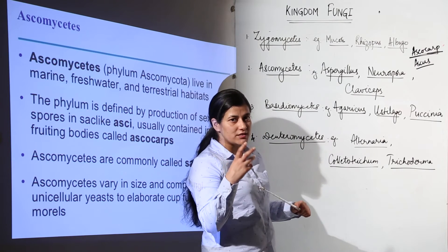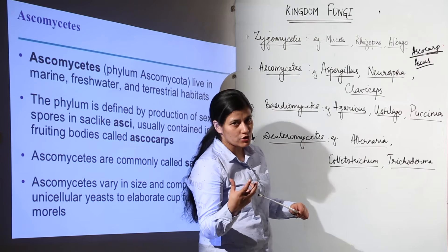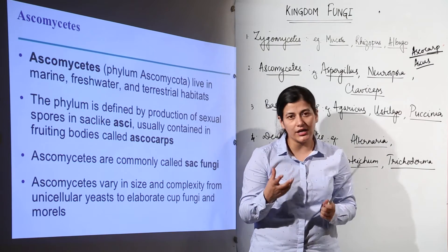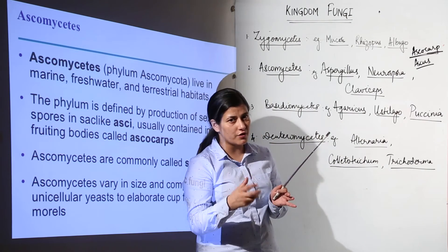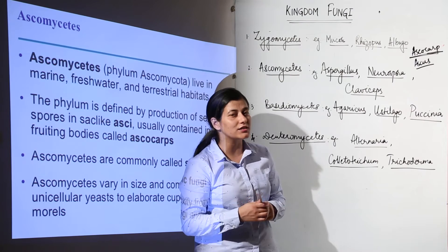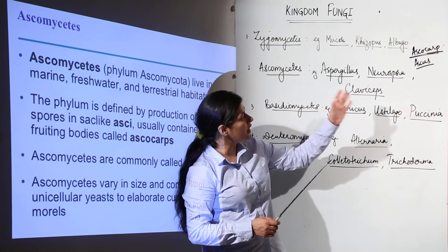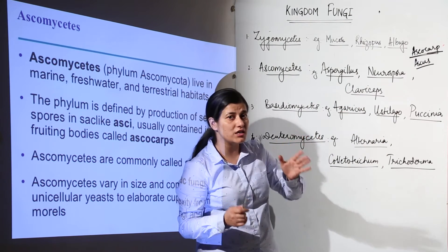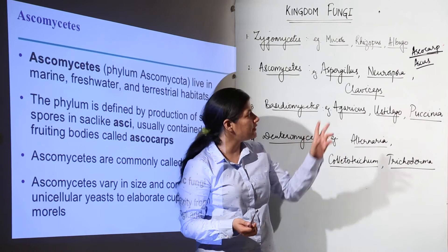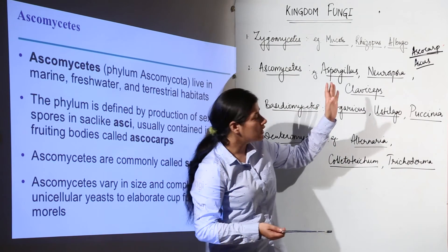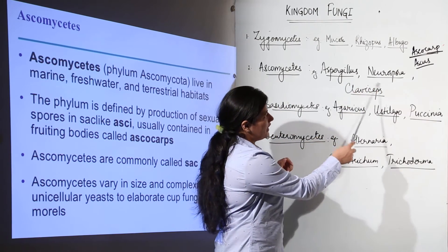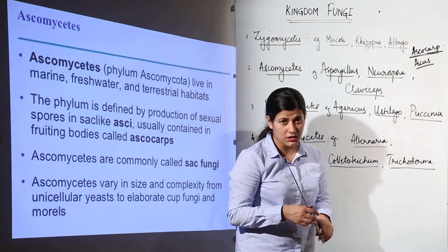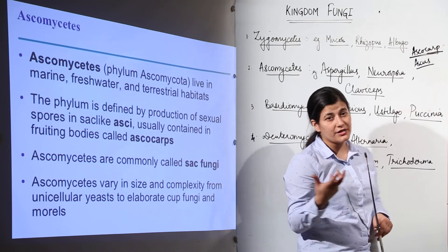Neurospora is a fungus belonging to Ascomycetes and is termed the 'Drosophila of the plant kingdom' — meaning if you want to study genetic implications in plant-like organisms, you would go for Neurospora, just as Drosophila is used for animal genetics. Then we have Claviceps, which is responsible for causing ergot of rye, used for the production of certain drugs useful for treating diseases.